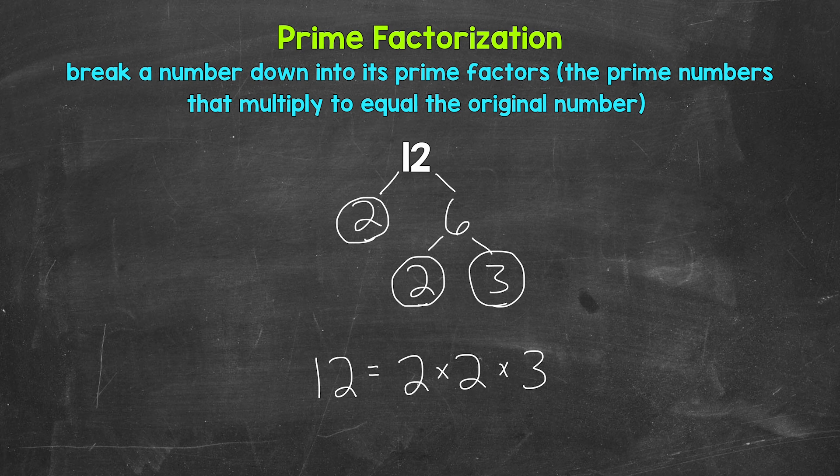And if we have the correct prime numbers, they will multiply to equal our original number. So let's check here. 2 times 2 is 4, times 3 is 12. So we are correct here.